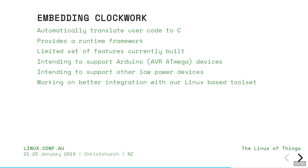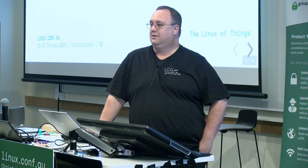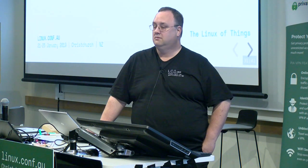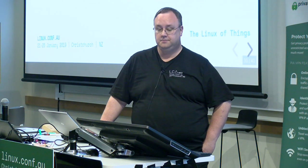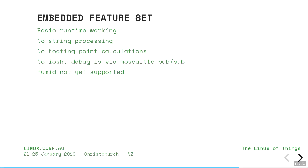We only have basic functionality at this stage — for example, there's no list function currently — but implementing those things won't take long since we now have the architecture. Getting the architecture was the hard part. We implemented NeoPixel LEDs and it barely took a day. There's no string processing or floating point yet. The iosh interface is not currently developed, but Mosquitto Pub/Sub is a good substitute. Humid is not currently supported, though it could be supported via redirect — running clockwork on a Raspberry Pi with Humid, then clockwork-to-clockwork communication and MQTT out to devices.